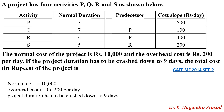First, let us write down the given data. The normal cost is 10,000. The overhead cost is 200 rupees per day. The project duration has to be crashed down to 9 days.